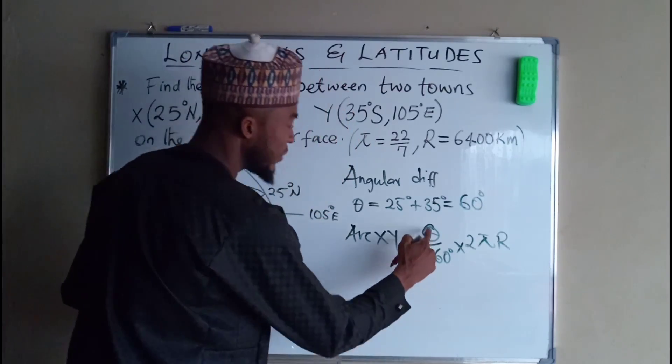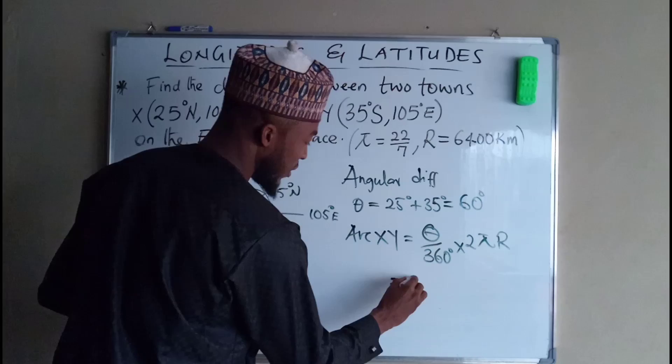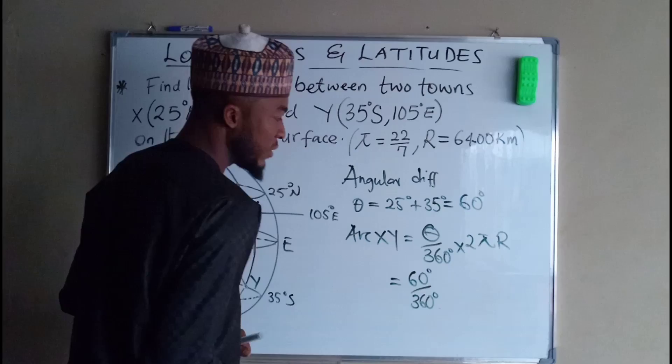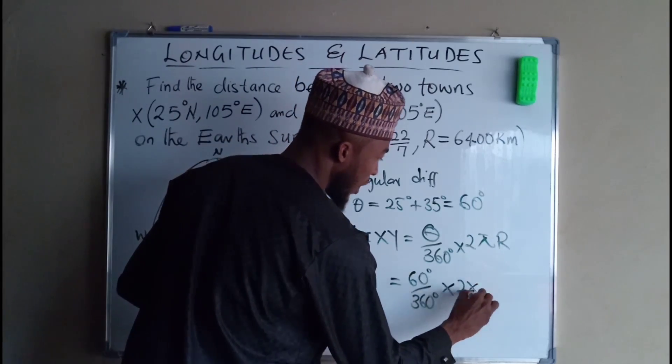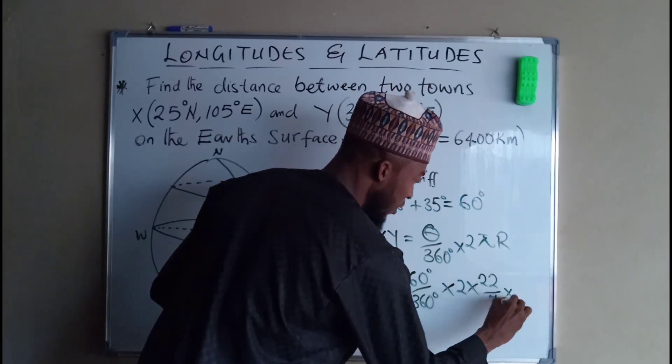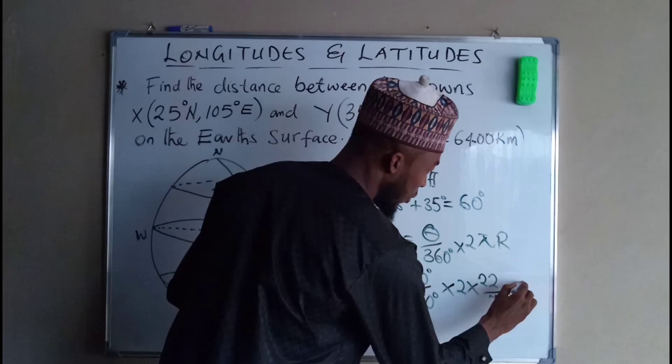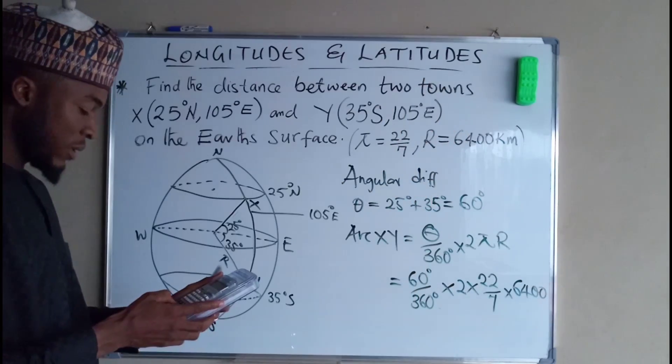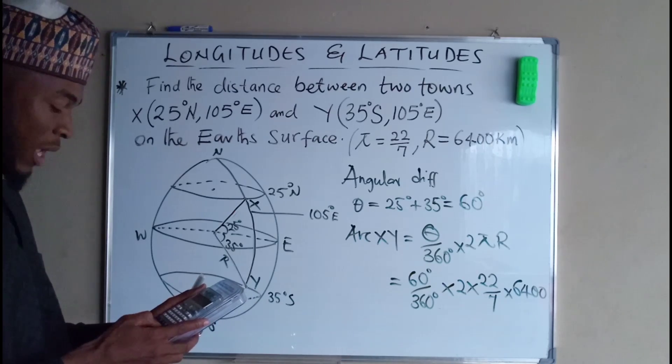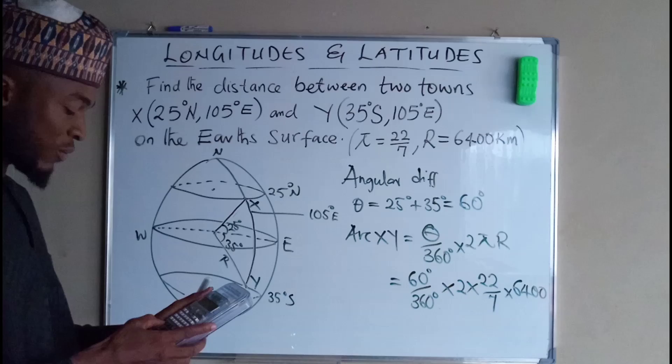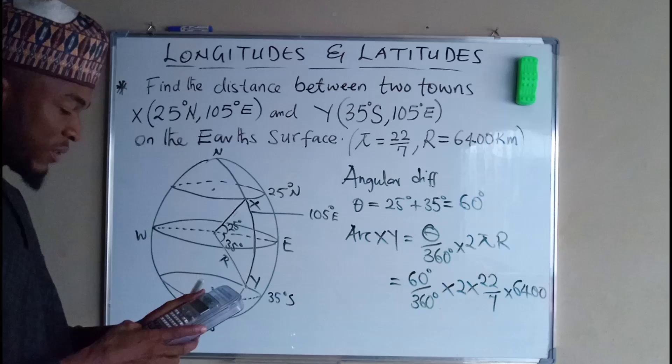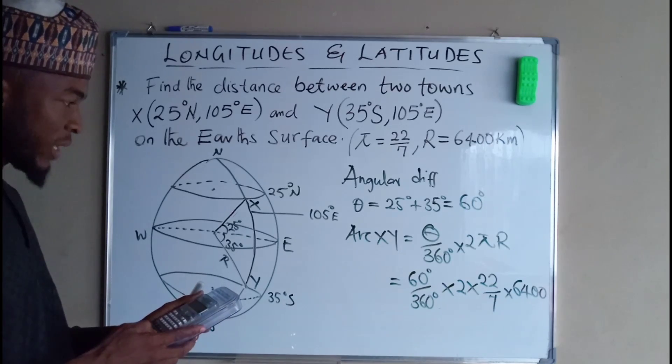So by substitution we have theta equal to 60 degrees divided by 360 degrees times 2 times pi which is given from the question as 22 divided by 7 times capital R is 6400. So 60 times 2 times 22 times 6400 divided by 360 divided by 7.